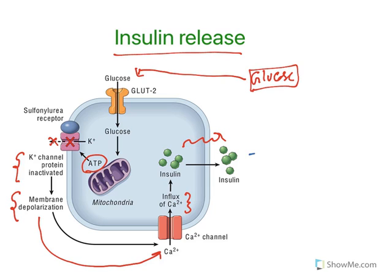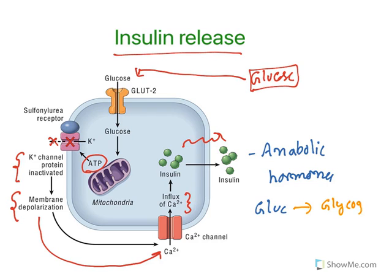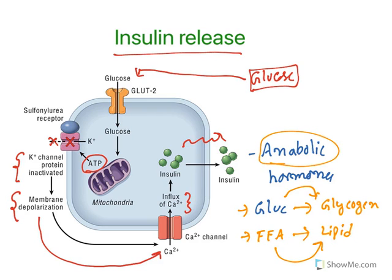Once insulin is released, insulin is a kind of anabolic hormone — it builds up bigger molecules. Whenever insulin is released, glucose is taken up into the cell, and excess glucose is converted into glycogen. Along with that, free fatty acids are converted into lipids. You can see monomers or smaller molecules getting converted into polymers or bigger molecules. Hence, it is known as an anabolic hormone.